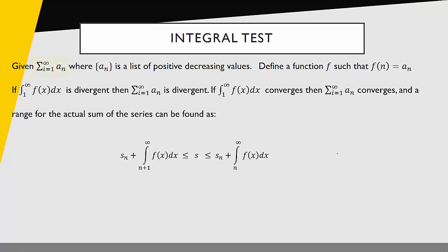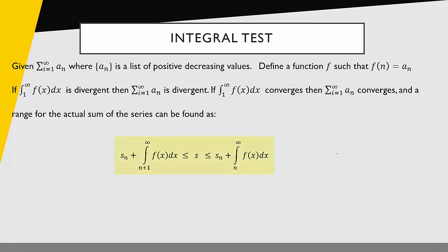In conclusion, given a series where the terms are positive and decreasing, we can define a function associated with that series. If the improper integral from 1 to infinity of that function is divergent, then the series is divergent. If that improper integral converges, the series converges. We can also generate a range for the actual sum of the series. We could make that range tighter by simply adding up more terms of the series before doing the integration. That concludes this video — thanks for your time.